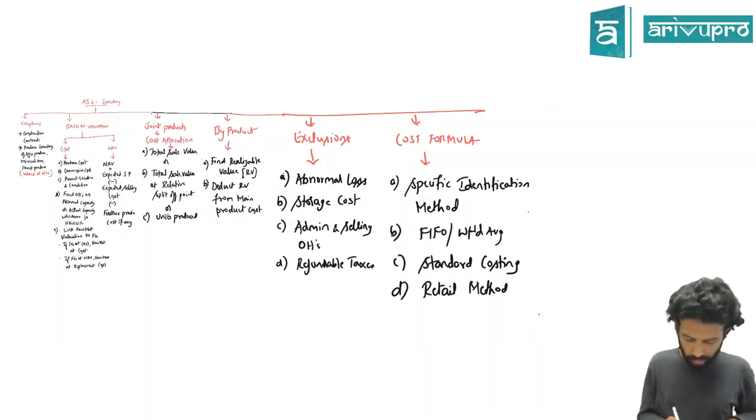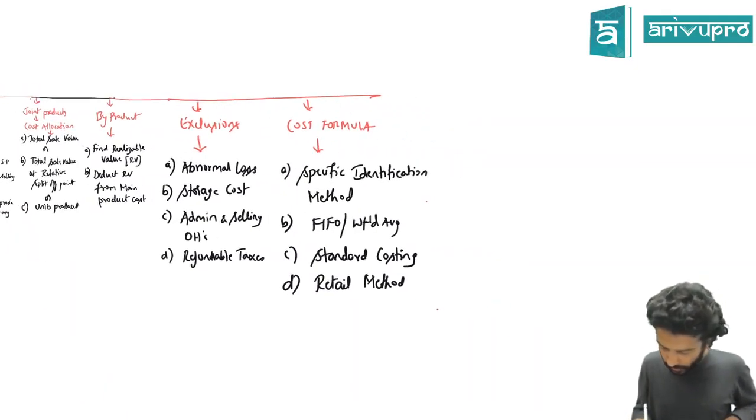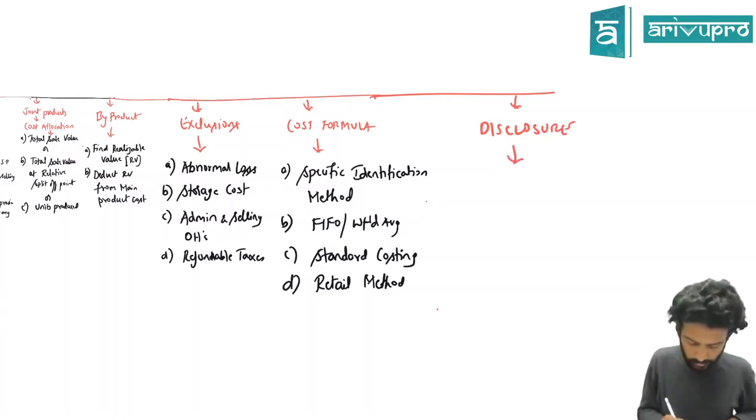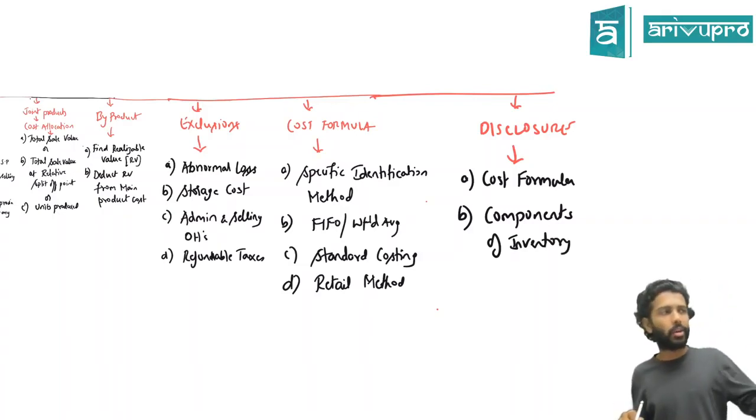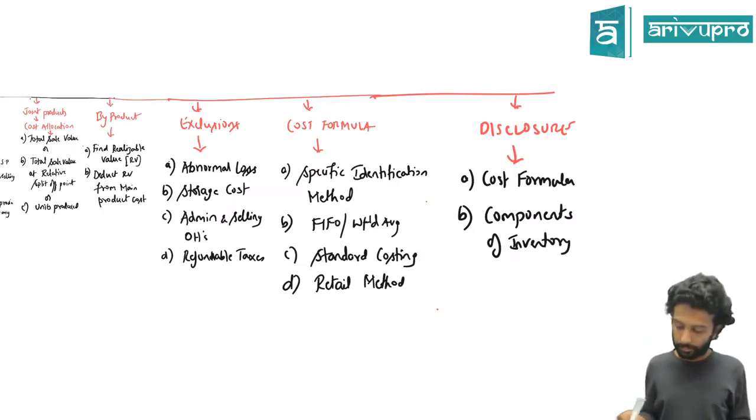If you want also, you can write disclosure also, bring in there, no problem. Last you can write disclosure. Disclosure could be your cost formula and components of inventory. Each component of inventory value should be given, components of inventory value.